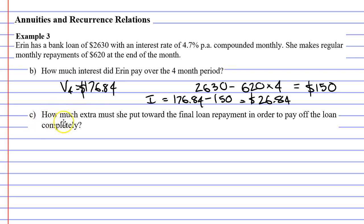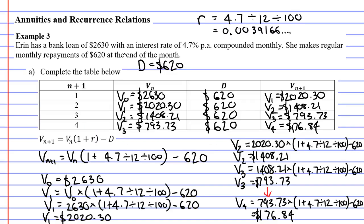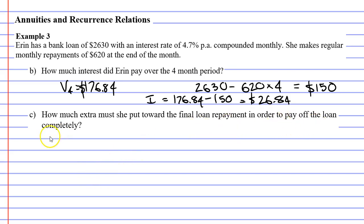Question C says, how much extra must she put toward the final loan repayment in order to pay off the loan completely? And you might remember that after the final payment at V_4, after four months, she owed $176.84. If she had paid an extra $176.84 on the final payment, her loan would have gone down to zero, and she would have paid off the loan completely. So the answer to question C is basically the same as the solution to V_4. It's $176.84.